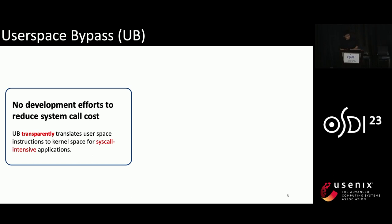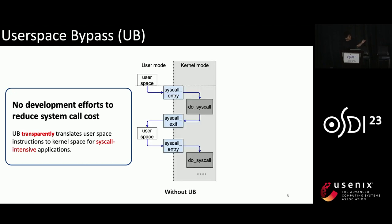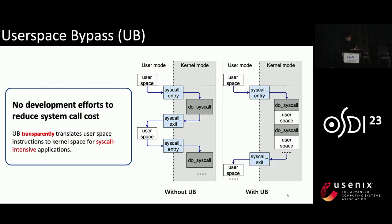So we propose User space Bypass, which requires no development efforts to reduce syscall cost. We name it UB. UB transparently translates user space instructions to run in kernel space for syscall intensive applications. The right picture shows how UB works: user space code runs in kernel space with just one entry and one exit, so most of the syscall costs are reduced.